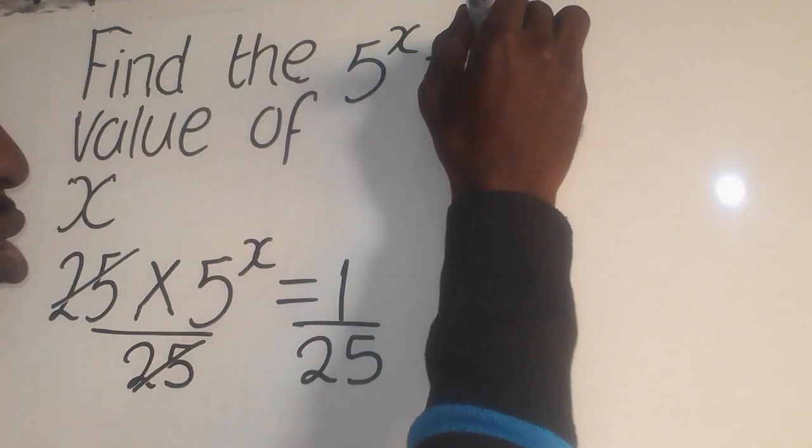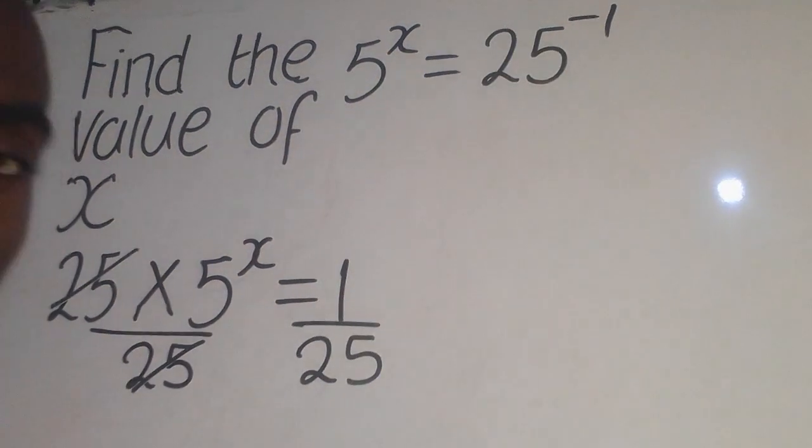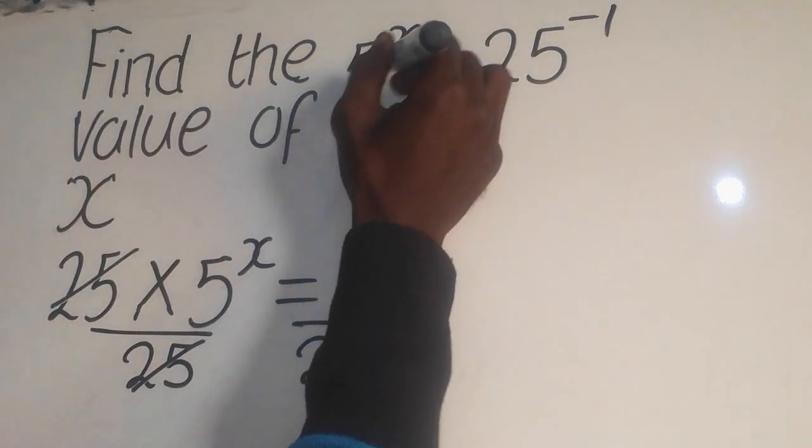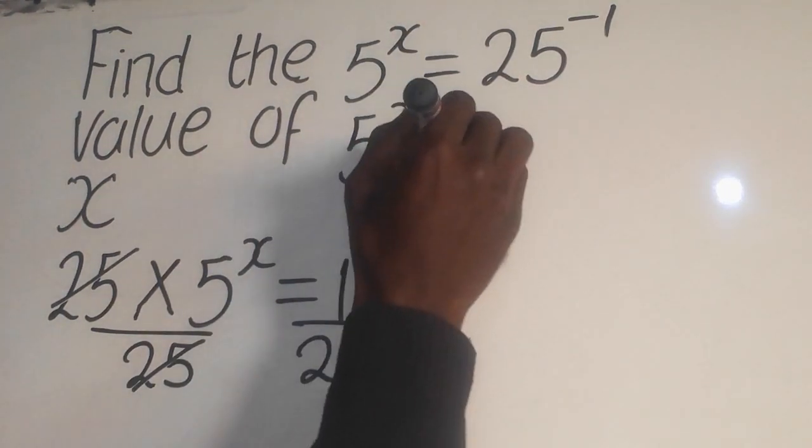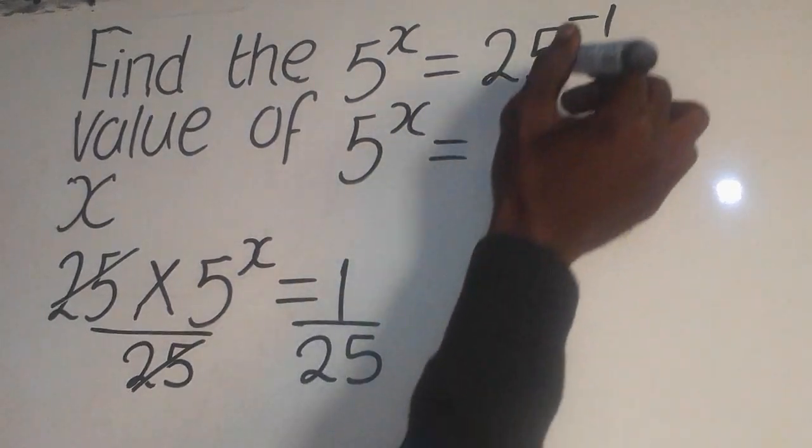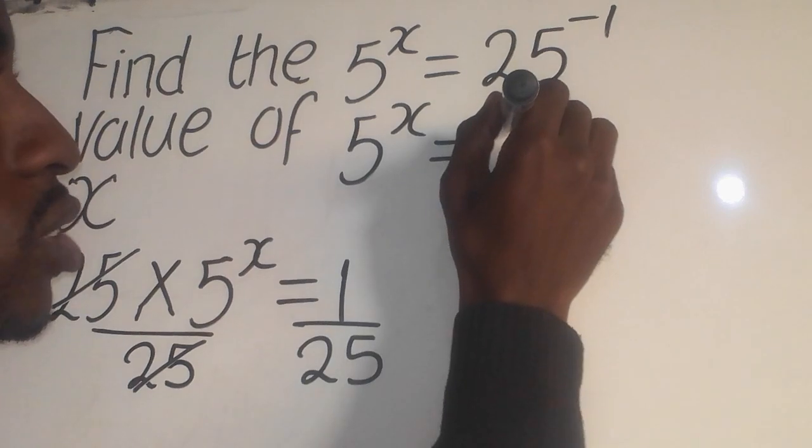So it will be 25 to the power negative 1, you have seen that? Yes. Now from there this 5 to the power x has to come down, so it will be like this equal to this one.